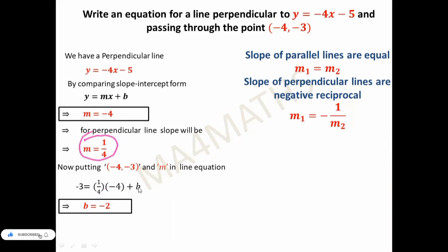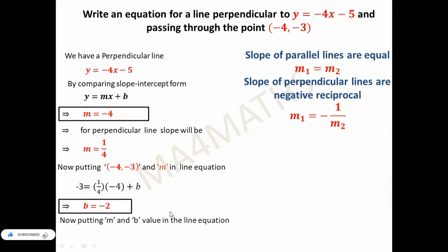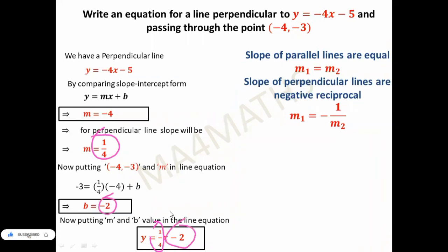We have found m = 1/4 and b = -2. Putting these into the slope-intercept form, the equation of the perpendicular line is y = (1/4)x - 2. I hope you got it. Thank you so much — if you like this video, please like, subscribe to my YouTube channel, and share with your friends.